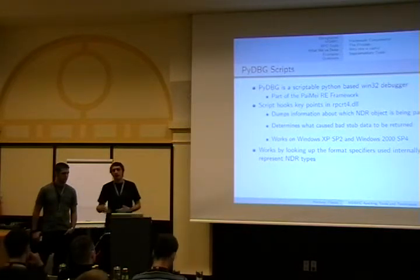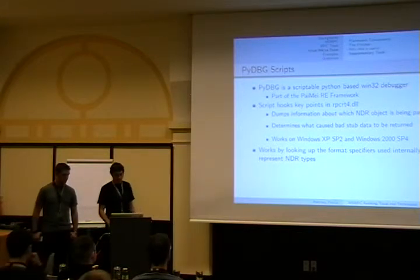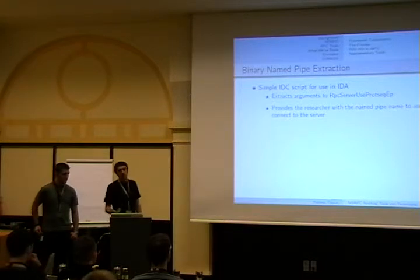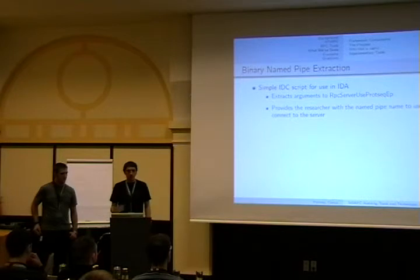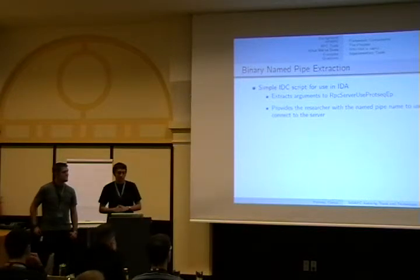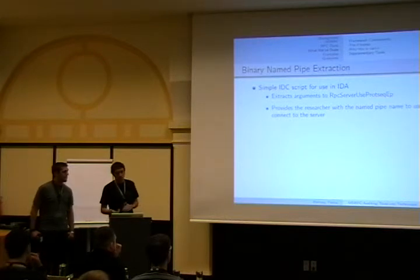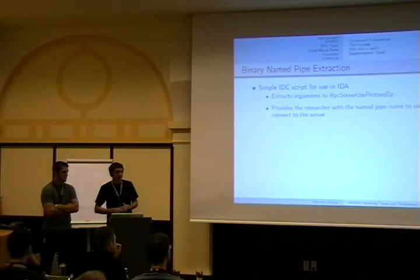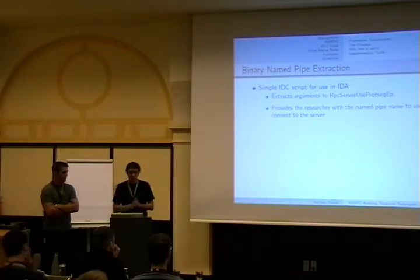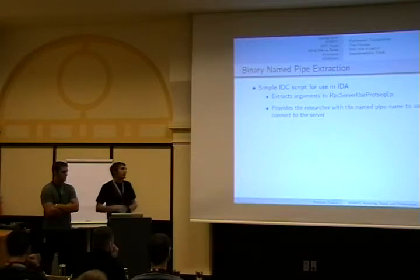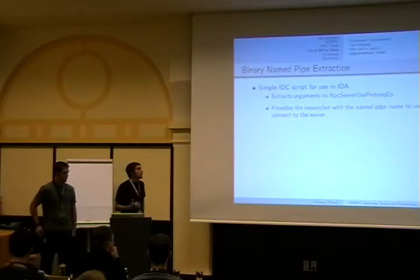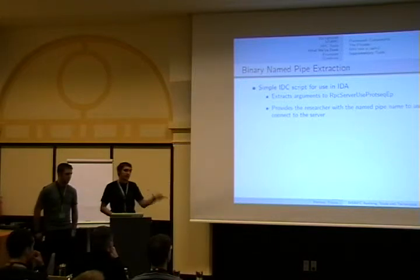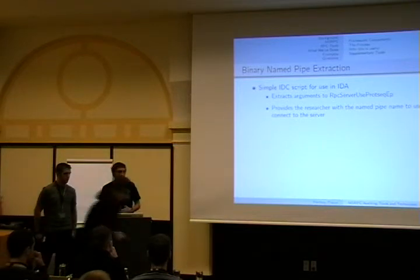We also have scripts that pull out format strings and correlate that between the IDL and the format string, showing which function inside RPCRT4 will be called to handle and unmarshal that type of data. To communicate with any RPC service you need a pipe name, so we provide a script that pulls that out by doing a cross-reference to the UseProtocolSequence call inside RPCRT4, back-referencing that, tracing up the stack statically, and pulling out the pipe name call. This gives you an easy way to open a binary you're auditing, run the script, and get the pipe name to communicate with our tools.